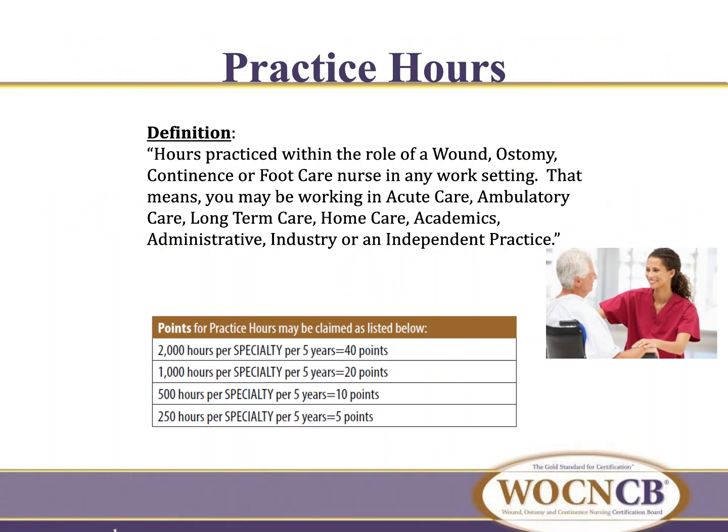You will calculate your practice hours pertaining to each specialty starting from your last certification date through your PGP deadline — in other words, the current five-year period. For example, if you are a full-time wound ostomy continence nurse and work 2,000 hours a year, for five years that is a total of 10,000 hours. You divide these per specialty, which equals over 3,300 hours per scope, meaning you may claim the 40 points in each area.